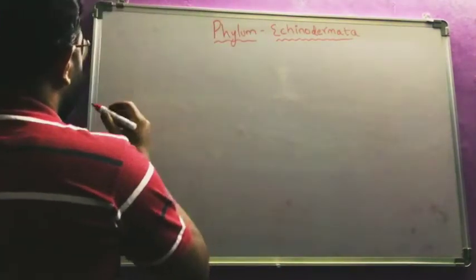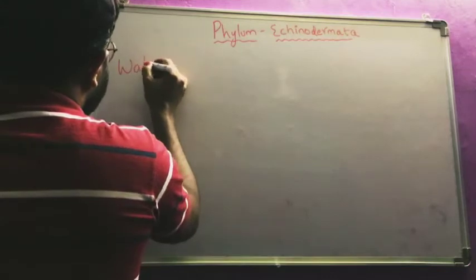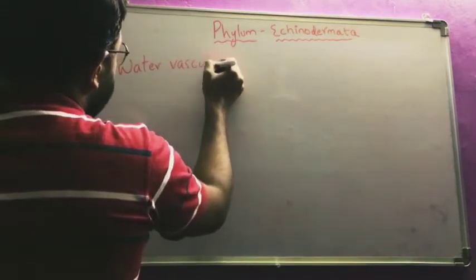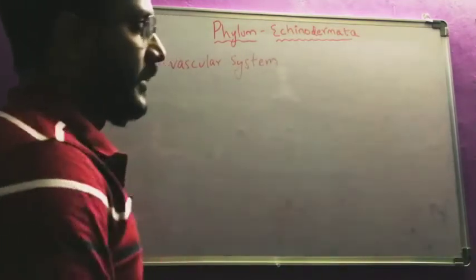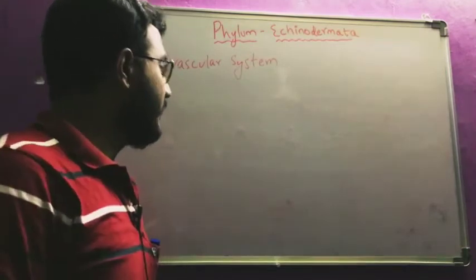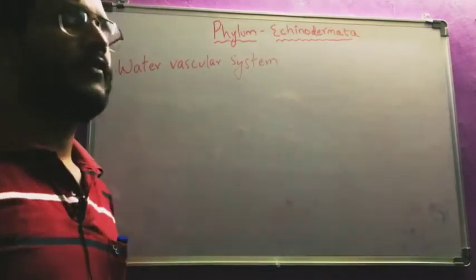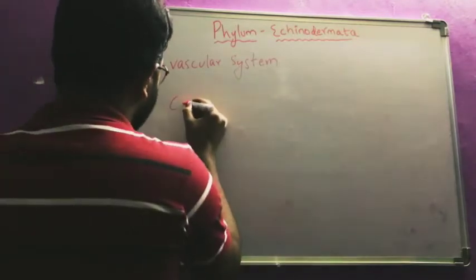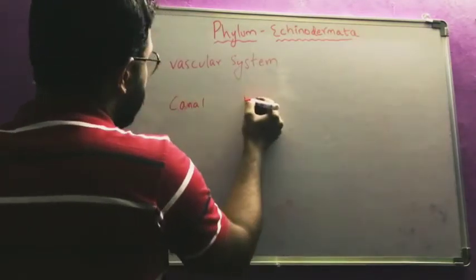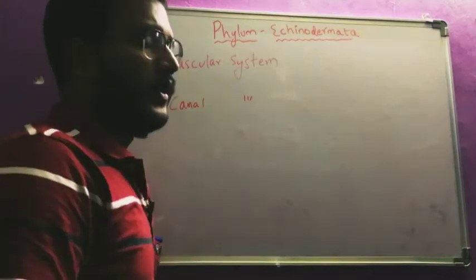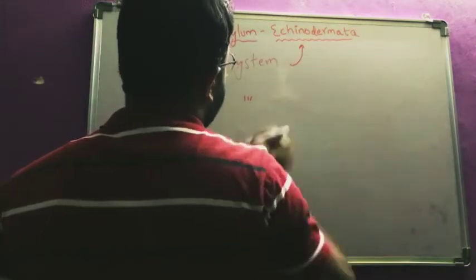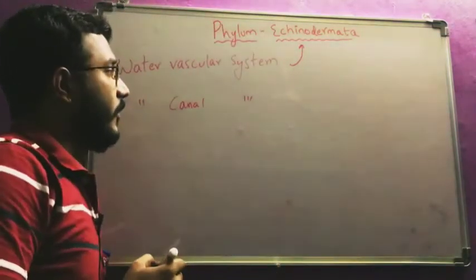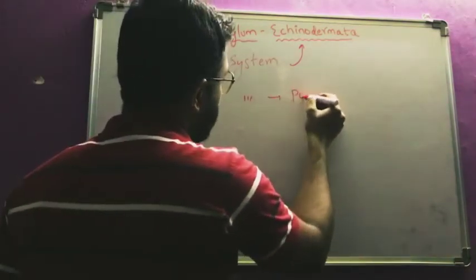The most important character present in the animals of phylum Echinodermata is that they are exhibiting a water vascular system. There may be confusion between water canal system and water vascular system — these two are completely different. Water vascular system is observed in animals of phylum Echinodermata, while water canal system can be observed in the animals of Porifera.